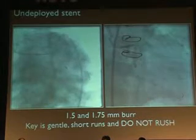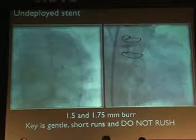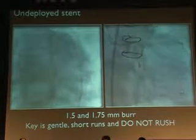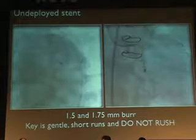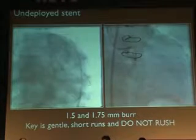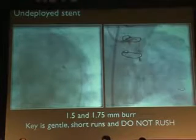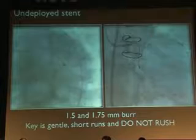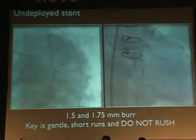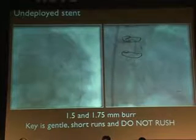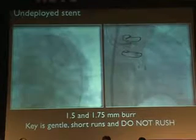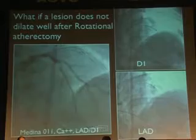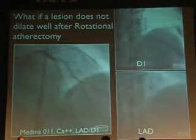We started with a 1.75 burr — it wouldn't cross initially, so it has to be extremely gentle. Normal rotational atherectomy runs are 15-20 seconds, but here you do runs of no more than 5-6 seconds, because when the diamond burr abrades on metal stent struts, the temperature rise in the coronary artery is immense. You must allow blood flow to cool the artery before proceeding, otherwise you get no-reflow. We also use higher burst speeds of around 180,000-200,000 RPM rather than the conventional 150,000-160,000. All four undeployed stent cases were successfully managed with subsequent stent deployment.